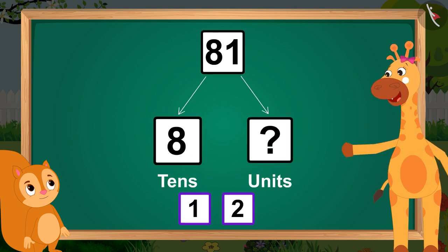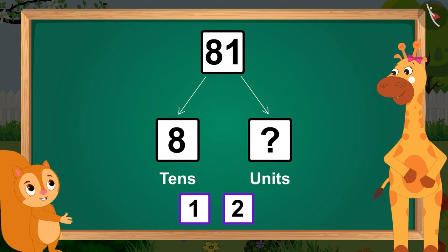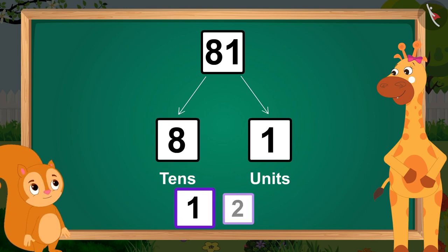Now, tell me, which of these two options given on the screen is correct, and which is wrong? Eighty-one will be made from eight tens and one unit. So, this option is correct.